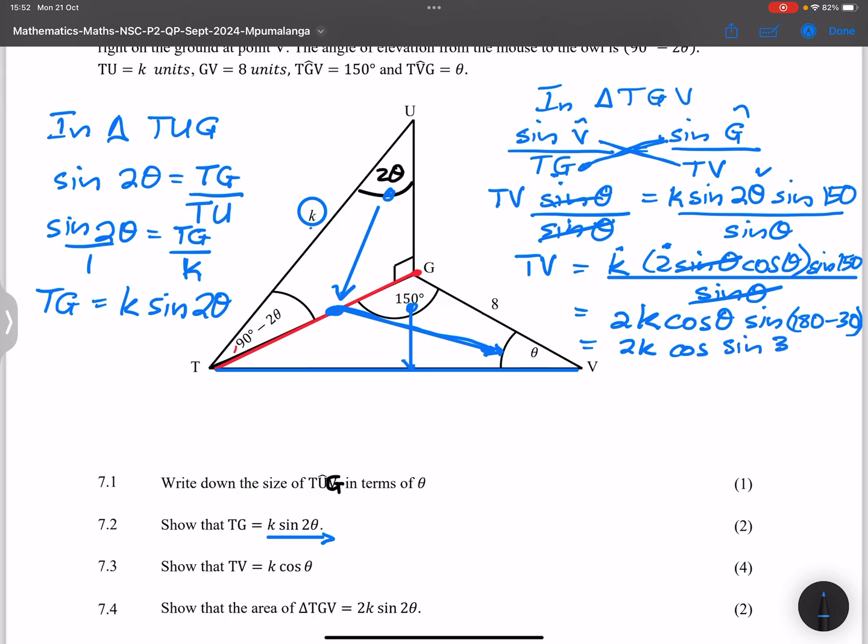But you and I both know that sine of 30, okay sorry this is cos θ, 2k cos of θ. Sine of 30 degrees is 1 over 2. And notice there those two cancel out. So that means that TV will be k times the cos of θ. Which is exactly what they wanted us to prove over there.